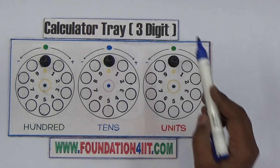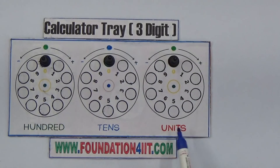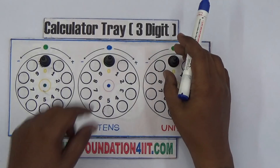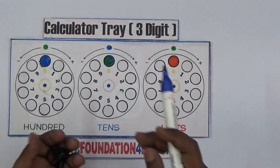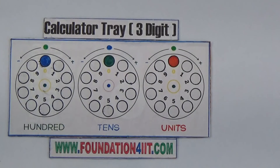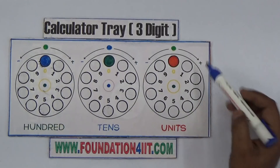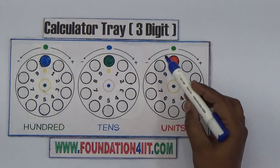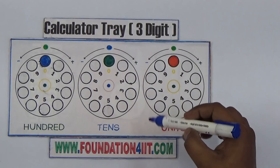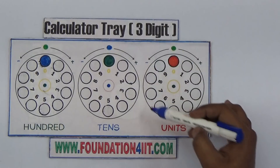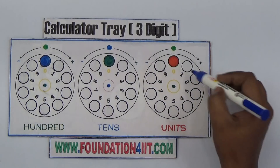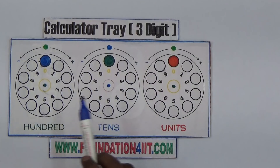In this calculator tray, there are three positions for three digits: units, tens, and hundreds. I made three circles. I took normal caramel coins here. Each circle goes from 0 to 9, so 10 parts total. The full circle is 360 degrees, divided by 10, giving 36 degrees in each place — and the same for tens and hundreds.